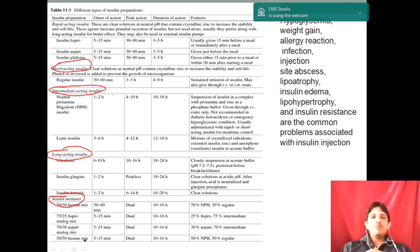Now what are the problems with insulin injection? They may cause hypoglycemia, which is one of the major problems. They may suddenly decrease blood sugar level. Other problems include weight gain, allergic reaction, infection, injection site abscess, lipoatrophy, insulin edema, lipohypertrophy, and insulin resistance. These are common problems associated with insulin preparations.